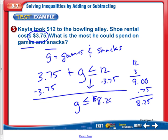Kayla cannot spend more than $8.25. He can spend $8.25 and then he wouldn't have anything left. But he can spend any amount up to $8.25, including $8.25, which is why we have this equal to symbol.